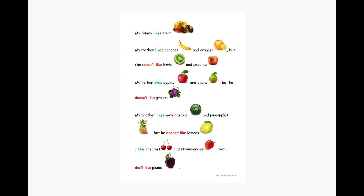Now we're going to do some questions. The answers are going to be true or false. Question one — true or false: my mother likes bananas. The answer is true, my mother does like bananas. Next question — true or false: my father doesn't like grapes. That's true, my father doesn't like grapes. Next question — true or false: I don't like cherries. The answer is false — I like cherries.